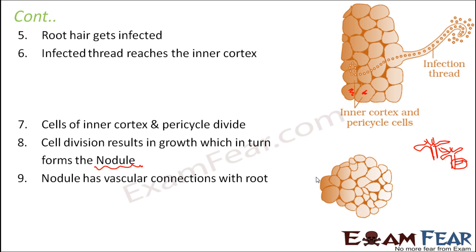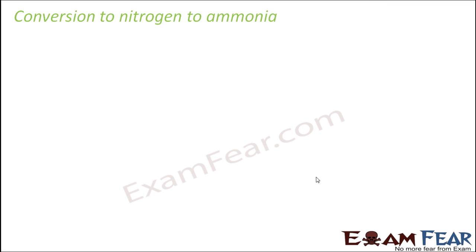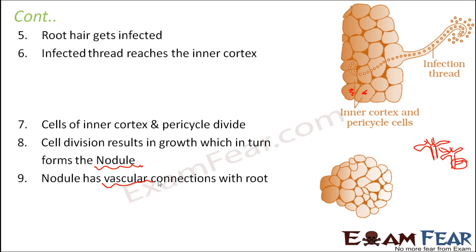Now the nodule is ready. It has all the required components needed for nitrogen fixation — for example, the enzyme nitrogenase is present inside the nodule, and leghemoglobin is also present inside the nodule. The nodule also has vascular connections with the root, meaning it gets all its nutrients — water, food, and minerals — from the root via xylem and phloem. So the nodule has all the materials required for nitrogen fixation.